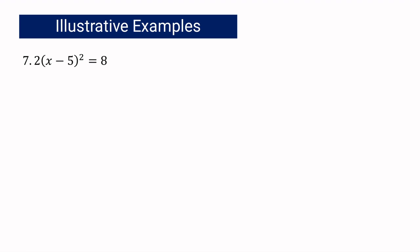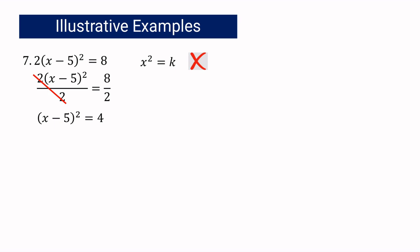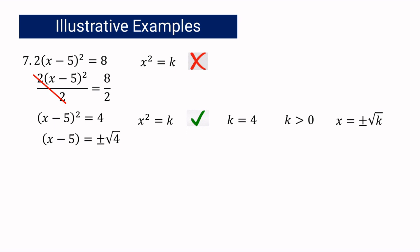Let us have the last example: 2 times the quantity x minus 5 squared equals 8. Is it written in x squared equals k? No, because we have a numerical coefficient of 2. Using the multiplication property of equality, we divide both sides by 2, giving x minus 5 squared equals 4. Now it is written in x squared equals k, where k equals 4 and is greater than 0. So x minus 5 equals positive or negative square root of 4, and since the square root of 4 is 2, x minus 5 equals positive or negative 2.